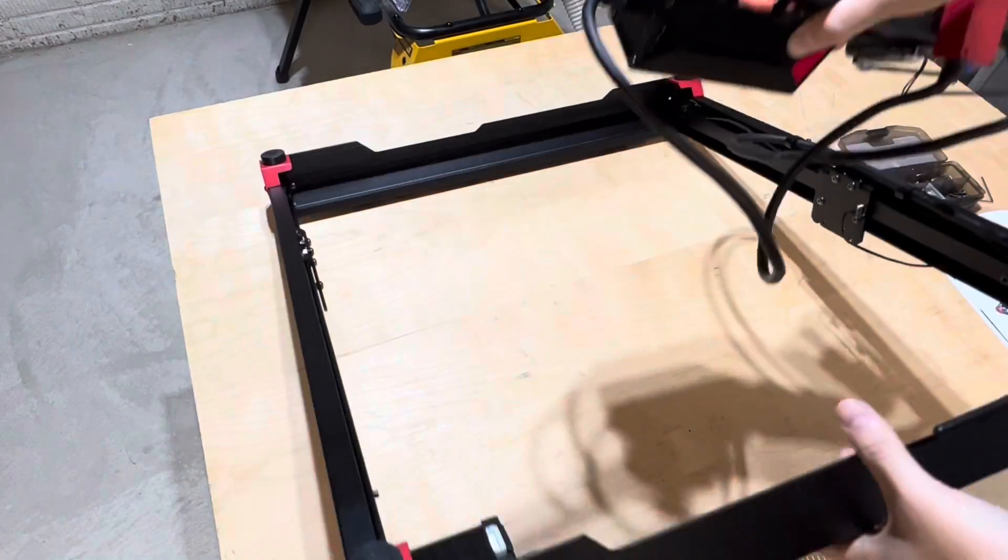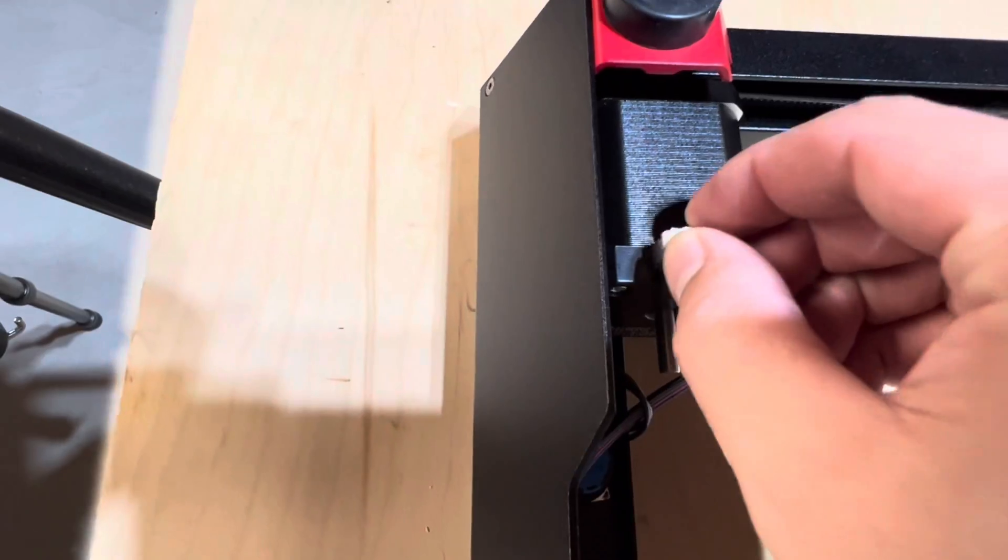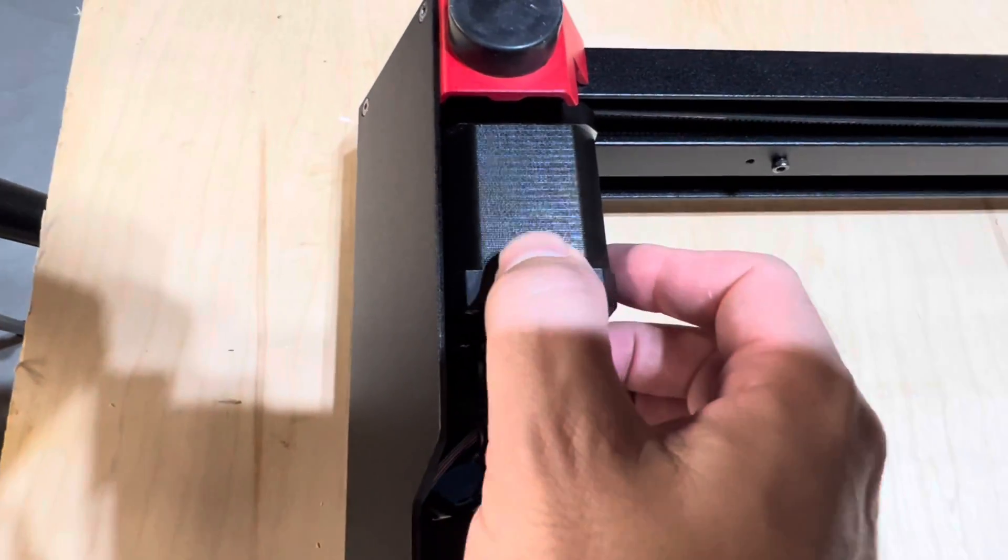Step two is connecting the y-axis motor. Flip the frame upside down and insert the cable into the y-axis motor. Flip the frame back over.